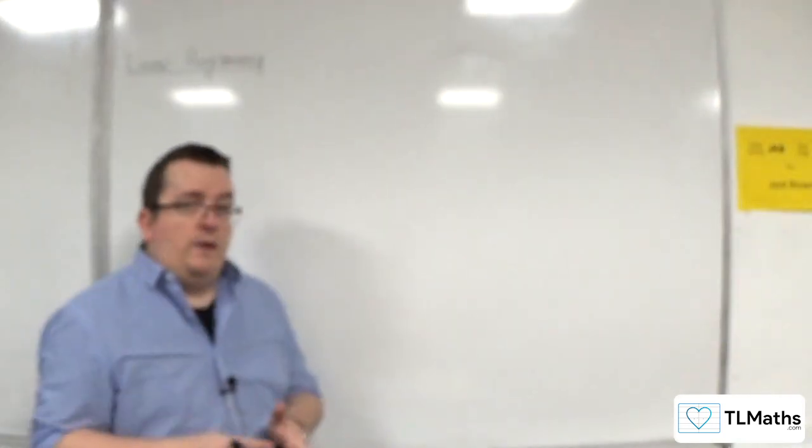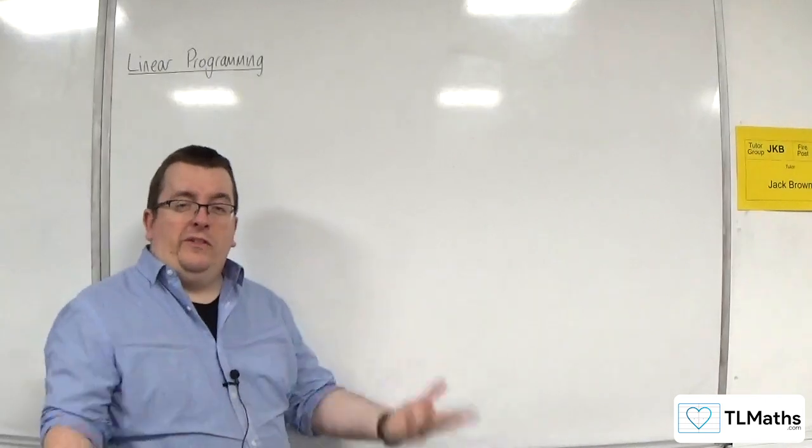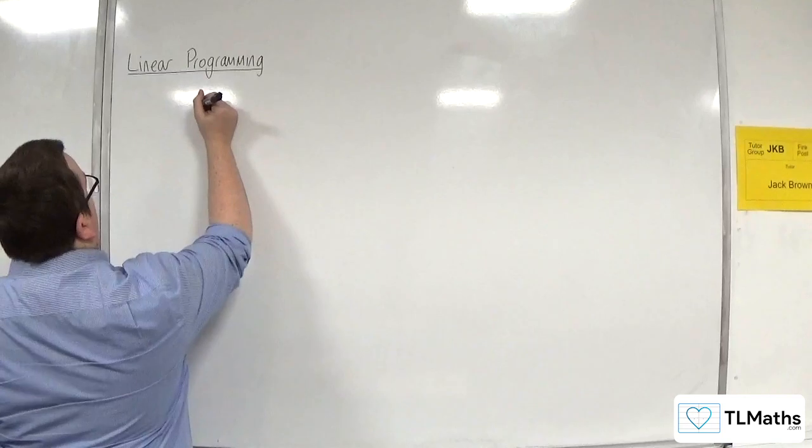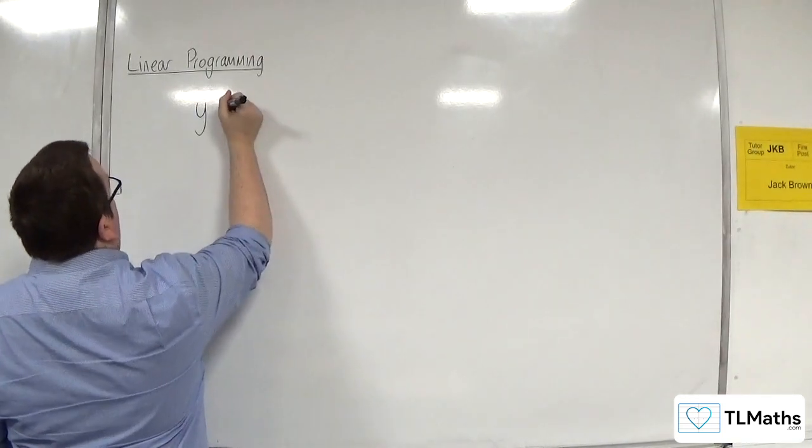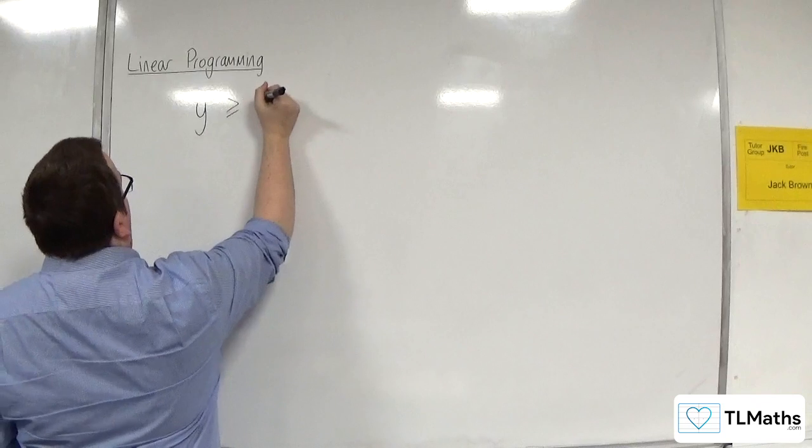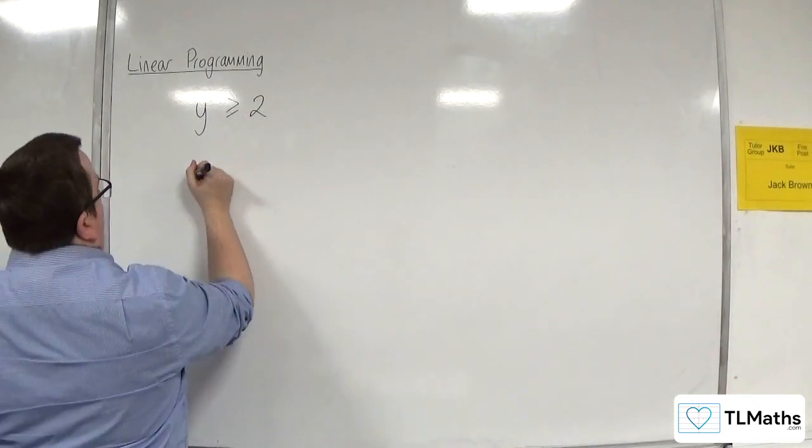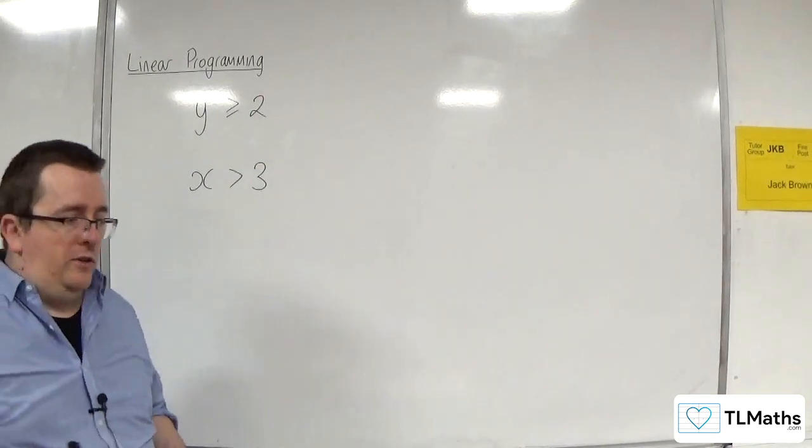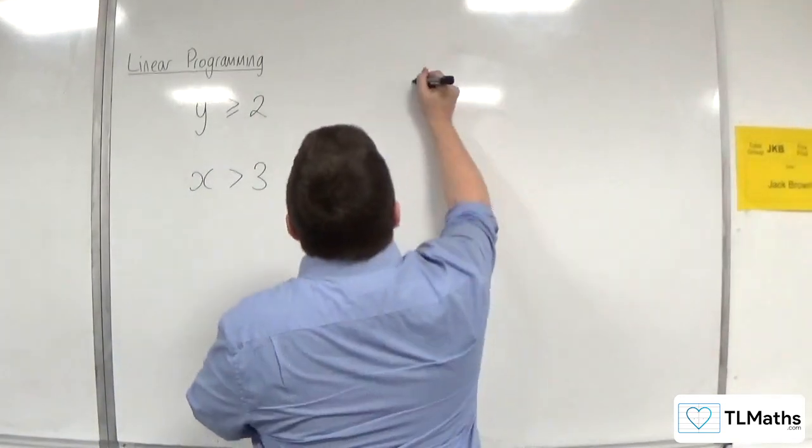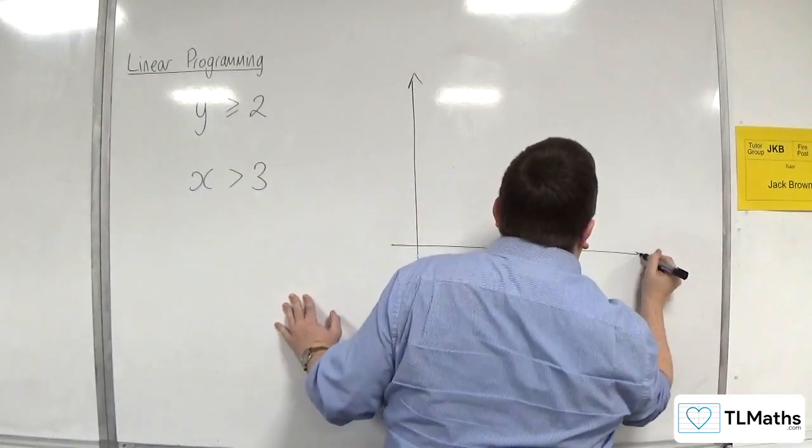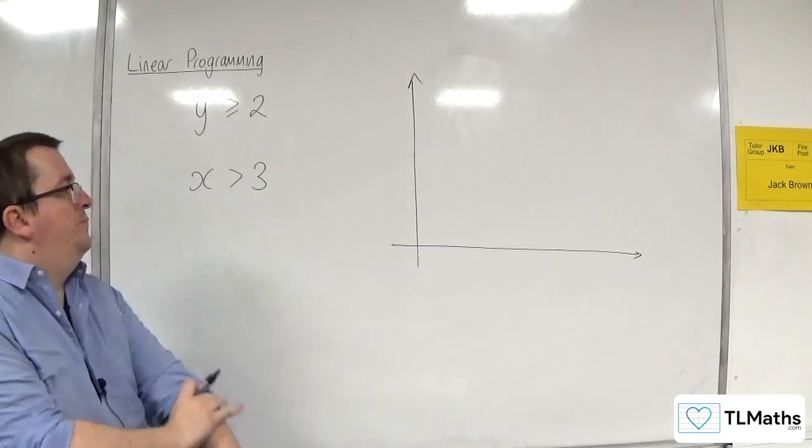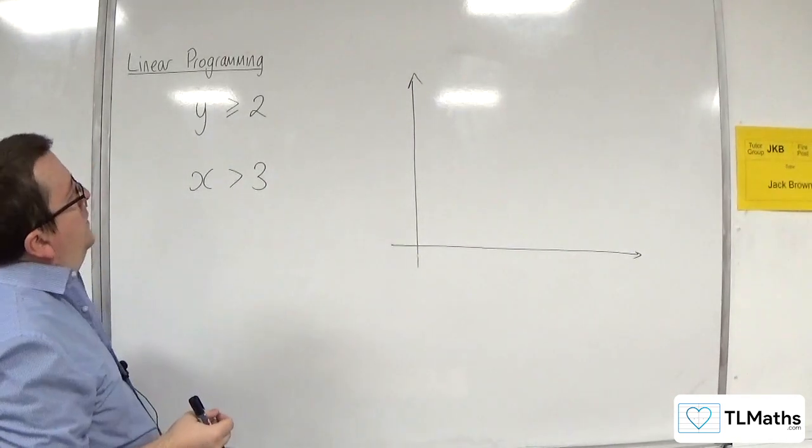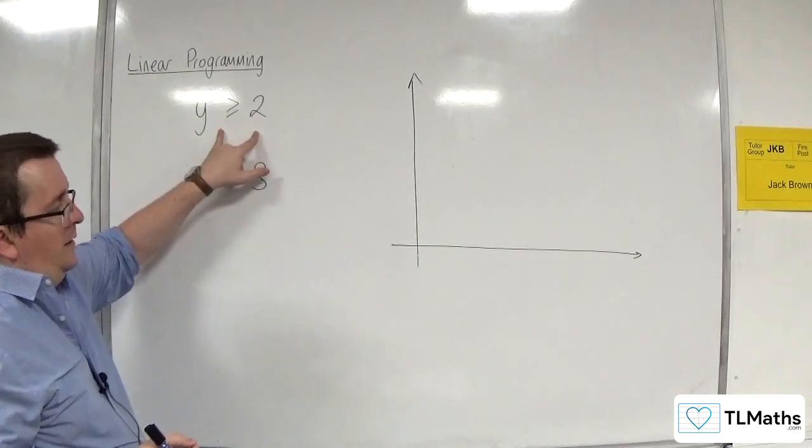So let's say I write down a few inequalities and we consider what they're going to look like. Let's say we think about y is greater than or equal to 2, and let's look at x is greater than 3. Let's just look at those two to start off with. As I said, I am not going to draw this accurately to start off with, but you can do it if you've got some graph or squared paper. So what would y is greater than or equal to 2 look like?